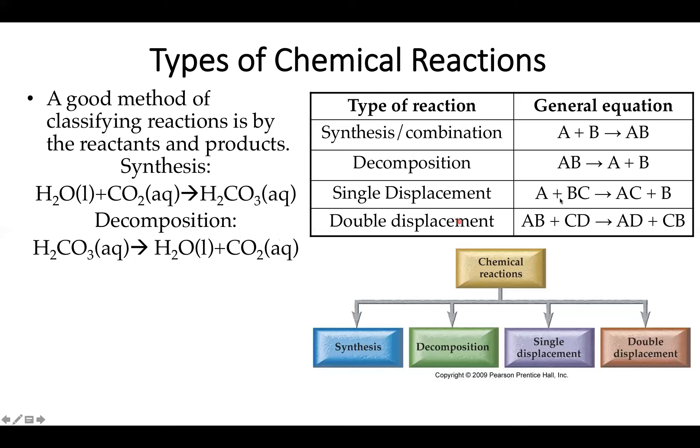We also have something called a single displacement reaction. This is kind of like an object coming in fast, hitting a molecule, and bouncing off something else. Molecule A comes out, kicks out component B. A good example of this would be something like calcium fluoride mixed with liquid bromine. What ends up happening is the bromine displaces the fluoride, and we end up with calcium bromide and fluorine gas.